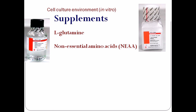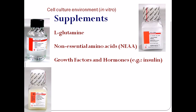Non-essential amino acids are usually added to the basic media components. They act as energy sources and are used in protein synthesis by the cell, and they may reduce the metabolic burden on cells. Growth factors and hormones — for example insulin — stimulate glucose transport and utilization, increase the uptake of amino acids by cells aiding protein metabolism, and help maintain cell differentiation.